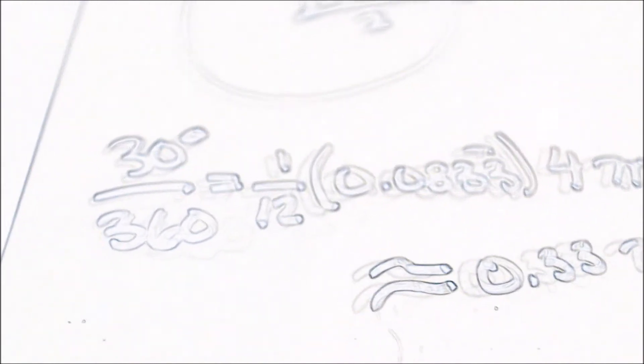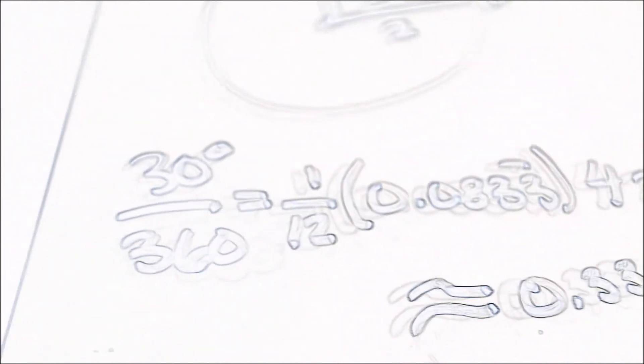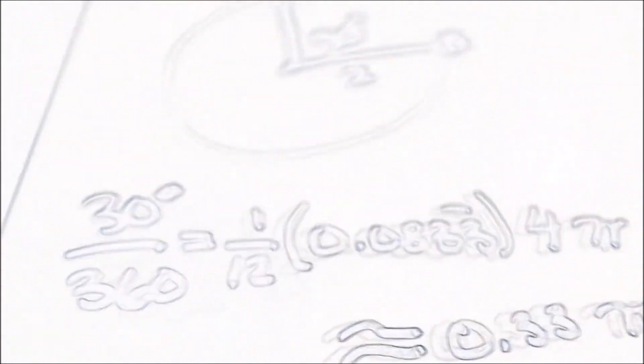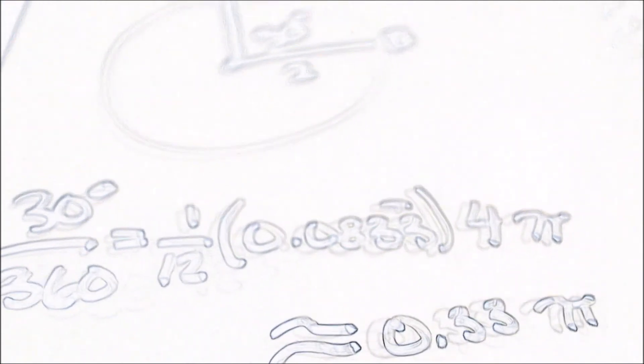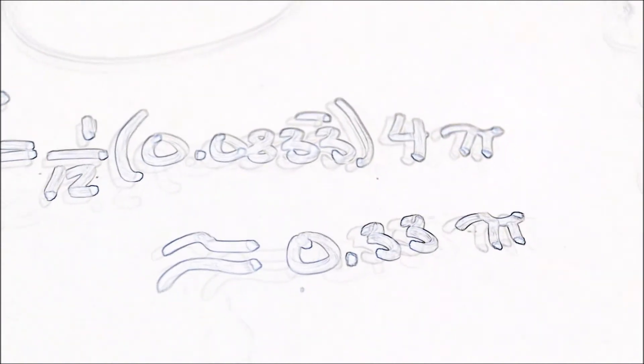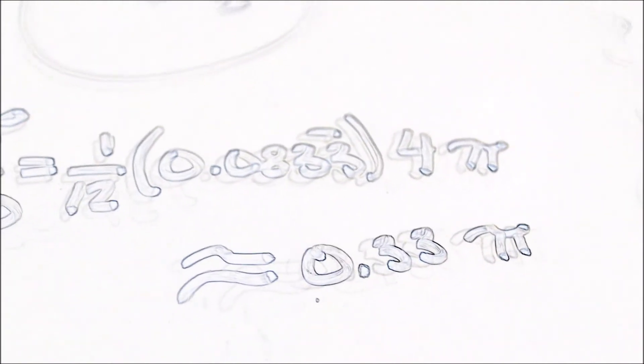Another example is arc length. This is a diagram. To solve this diagram, this is what we must do. 30 over 360 equals 1 over 12. From that, we must multiply 4 times pi. We would get about 0.33 pi.